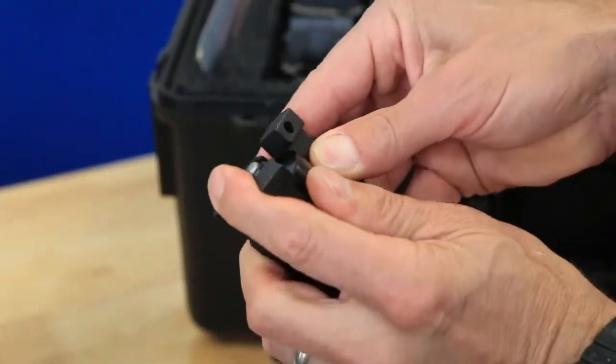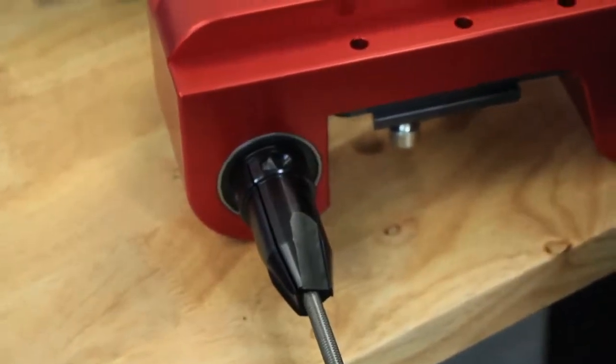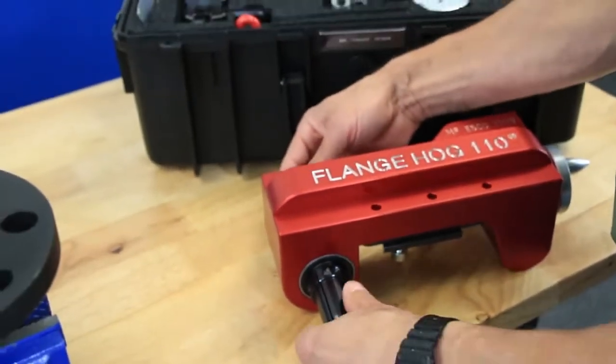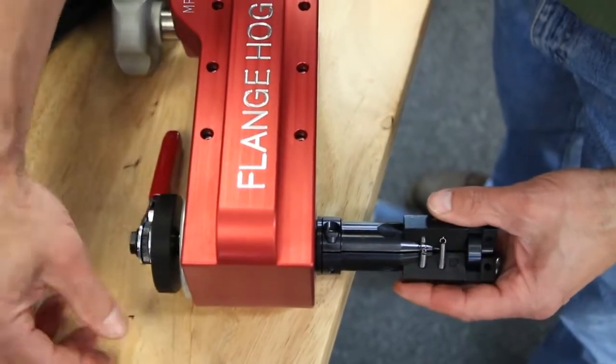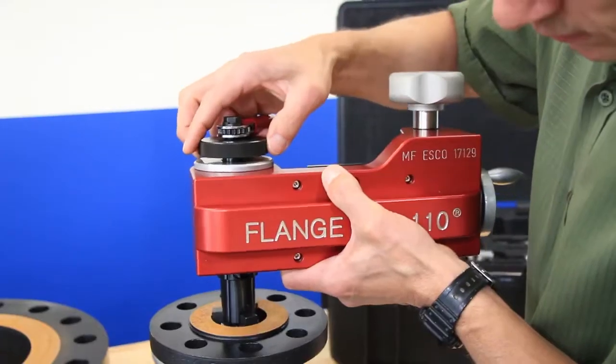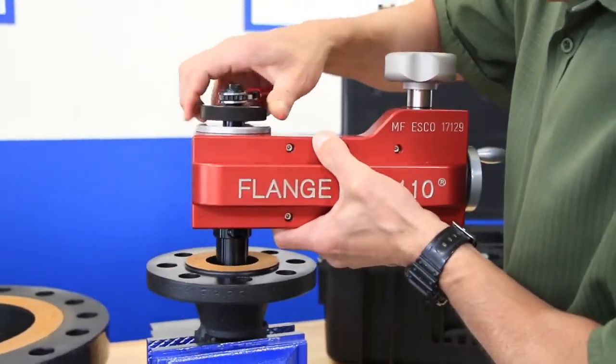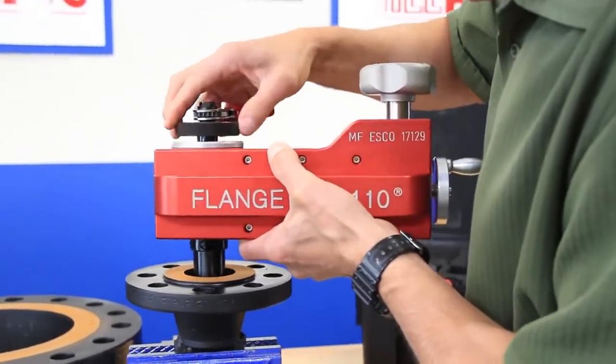Start by attaching the clamp ribs to the actuator with the taper side facing in and inserting the draw rod actuator assembly into the tool. Rotate the knurled knob until the ribs begin to expand and then place the clamp system into the flange so that the ribs are about a quarter inch below the surface as shown.